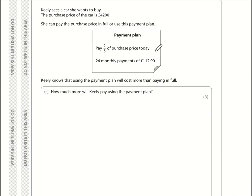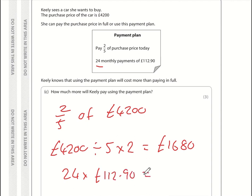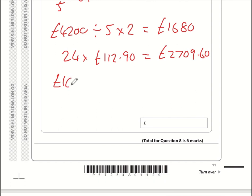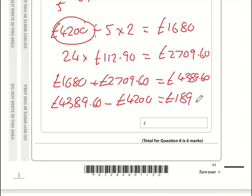Question 8: if Keely uses the payment plan, how much will she pay? She pays two-fifths of £4,200 upfront: 4200 divided by 5 times 2 equals £1,680. She also pays 24 times £112.90, which is £2,709.60. In total she pays £1,680 plus £2,709.60, which is £4,389.60. That is greater than the original cost of £4,200, so the extra amount she pays is £4,389.60 minus £4,200, which equals £189.60.